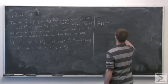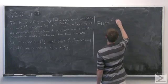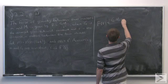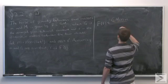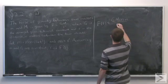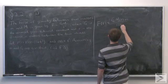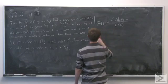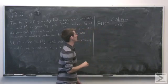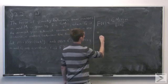So f of t is going to be G times capital M at time t times small m, which is constant, over r of t squared. Now, we can substitute in the formulas here.